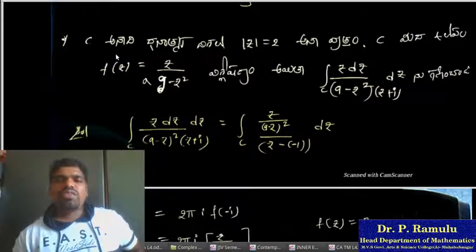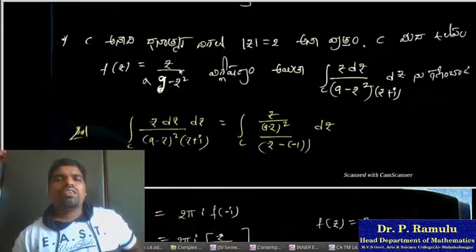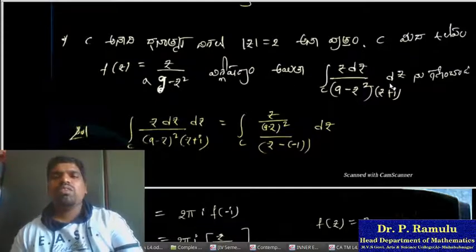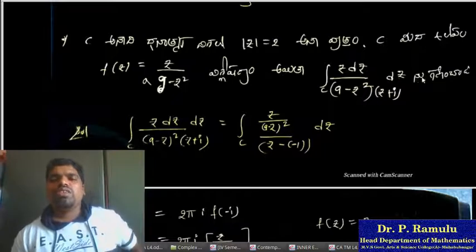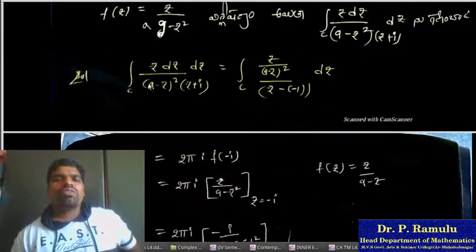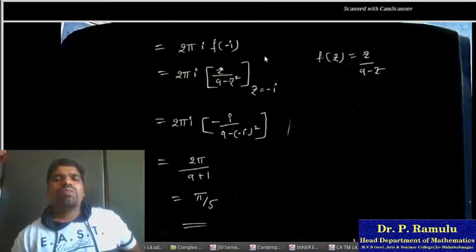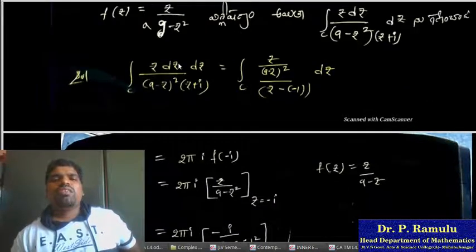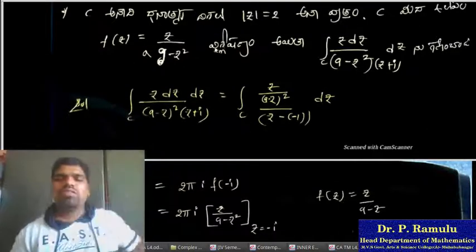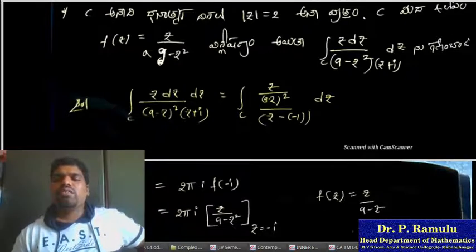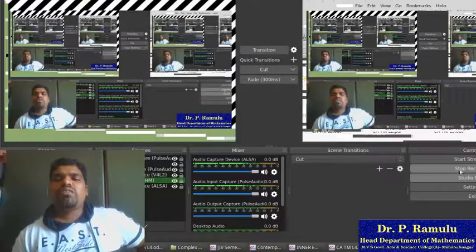At z = 0, the problem is 2πi by 2. The result is 2πi. These are 3 side powers. Thank you for watching.